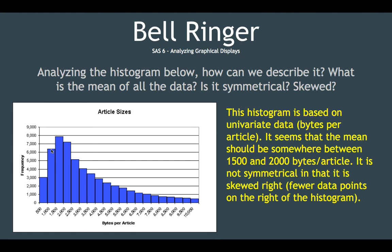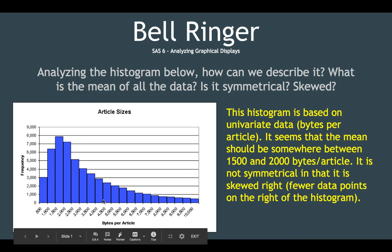So it is not symmetrical, and that is skewed right. Fewer data points on the right of the histogram.